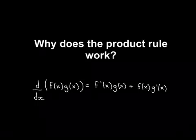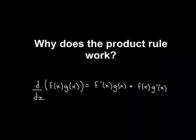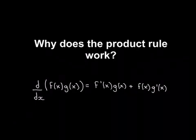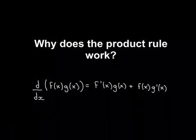In this video I'm going to explain why the product rule of differentiation works. The product rule says that if you want to differentiate a product of two functions, f(x) times g(x), the answer is the derivative of f(x) multiplied by the undifferentiated g(x), added to the derivative of g(x) multiplied by the undifferentiated f(x). We want to see why this is true.